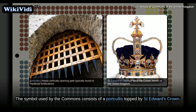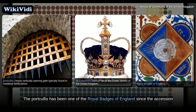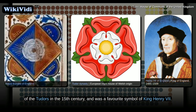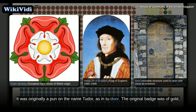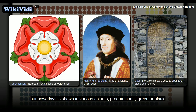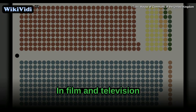The symbol used by the Commons consists of a portcullis topped by St. Edward's crown. The portcullis has been one of the royal badges of England since the accession of the Tudors in the 15th century, and was a favourite symbol of King Henry VII. It was originally a pun on the name Tudor. The original badge was of gold, but now the Common Symbol is shown in two colors, predominantly green or black, in film and television.